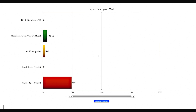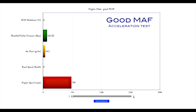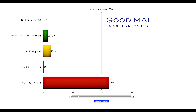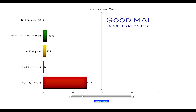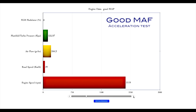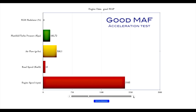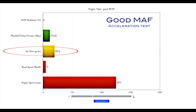Here we go, driving with a good MAF, shifting through the gears from standstill up to 85 kilometres an hour. You can see the engine speed revving up in RPMs, and while we're shifting through the gears it goes up and down.